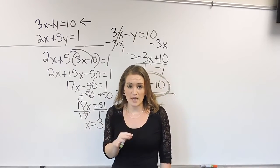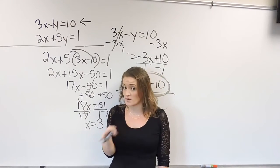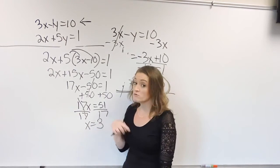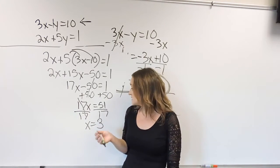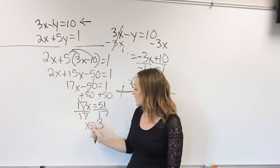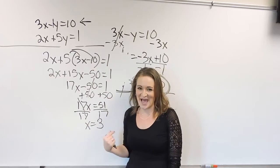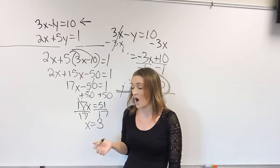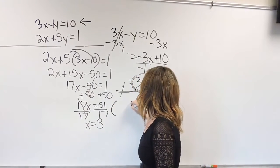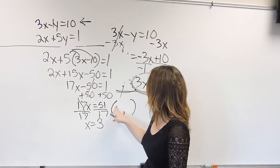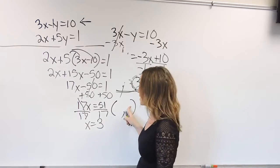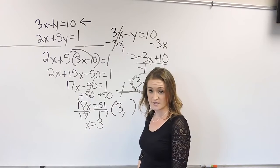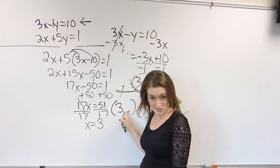So remember, when it comes to solving systems, you have one of three situations. They either cross at a point, no solution, or infinitely many solutions. So the fact that we got a value here for x, this means that we have a point going on. So when it comes to having a point, remember, we have an x and a y value. So far we solved, and we got 3 for x. So we still need to figure out what is y.